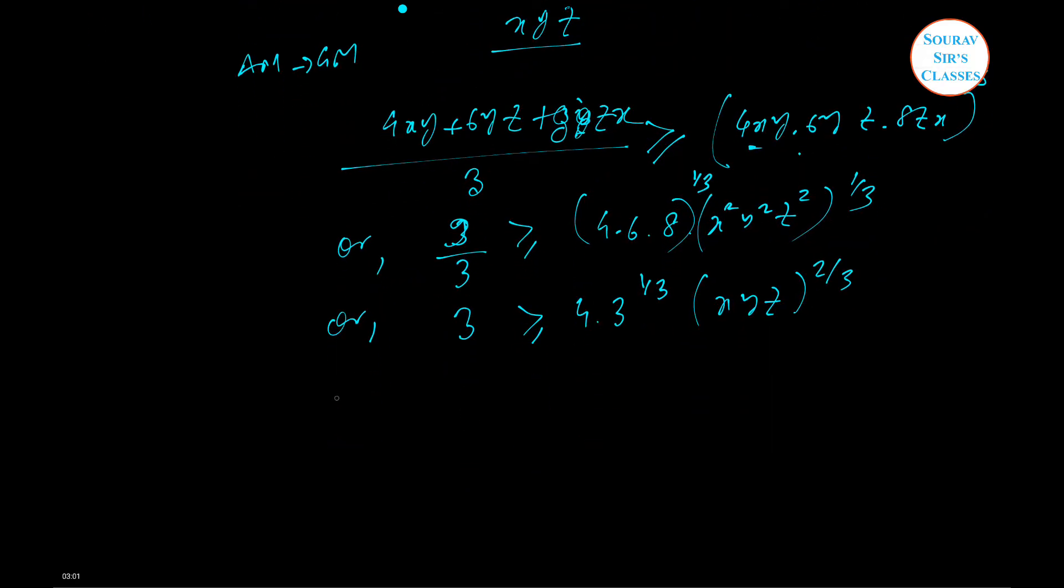Cubing both sides will lead us to 3 cube greater than or equal to 64 times 3 times XYZ. Simply, XYZ if we just change the side is less than or equal to 3 by 8. Hence the answer is 3 by 8. So the maximum possible value of the product XYZ is 3 by 8.